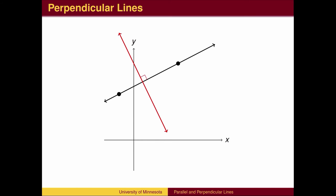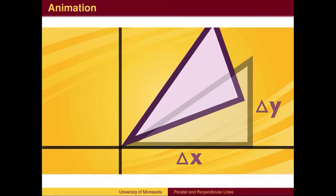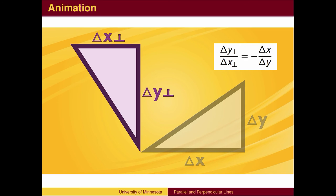If we know the slope between two points, what is the slope of a perpendicular line? When we rotate the triangle by 90 degrees, the rise and run interchange places.